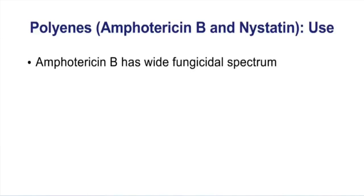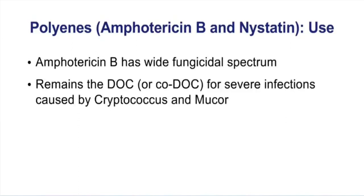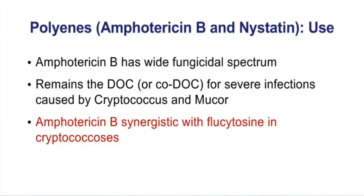Amphotericin B has long been considered a broad-spectrum antifungal, but because of toxicity its use has been limited over time. It's still the drug of choice for severe infections caused by Cryptococcus and Mucor, though even then we use it for a defined period and then switch to a different antifungal. For cryptococcal meningitis, Amphotericin B is often combined with flucytosine — our one and only example of antifungal synergy — allowing us to lower the dose of Amphotericin B to reduce toxic side effects.